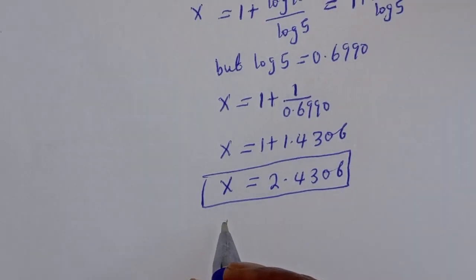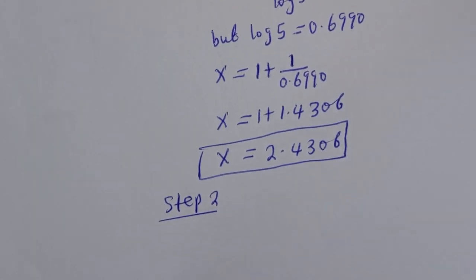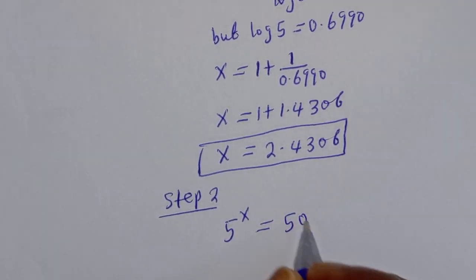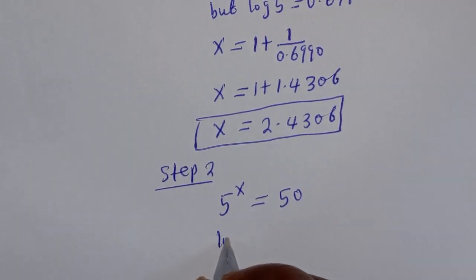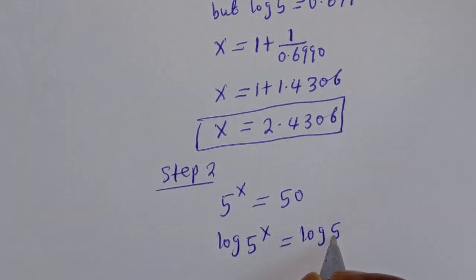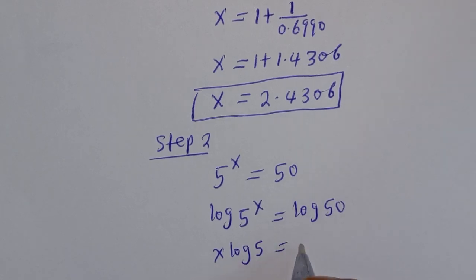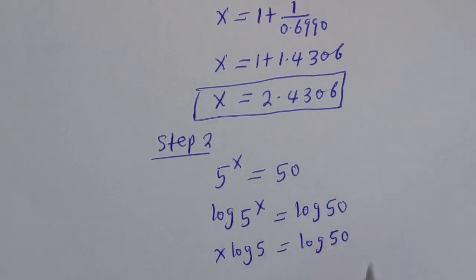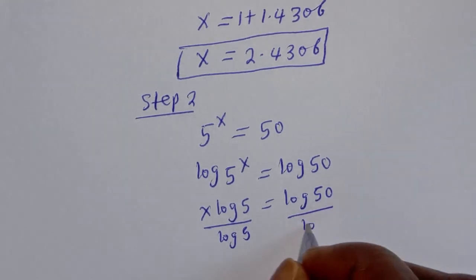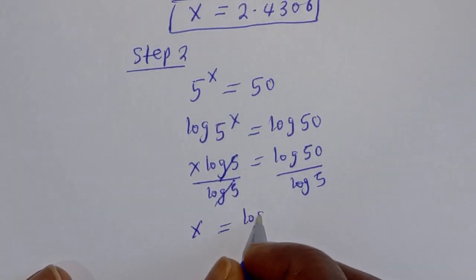Now let's solve in another way — this is Step 2, which is the easiest method. We have 5 raised to the power s is equal to 50. Taking the log of both sides: s times log 5 is equal to log 50. Dividing both sides by log 5, we get s equals log 50 over log 5.